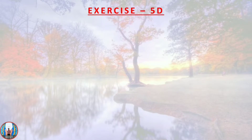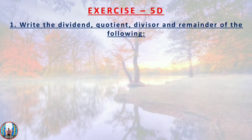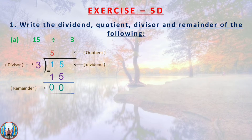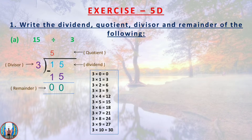Exercise 5d, question number 1: Write the dividend, quotient, divisor, and remainder of the following. First question: 15 divided by 3. Here 15 is the dividend, 3 is the divisor, and 3 fives are 15, so 5 is the quotient and 0 is the remainder.